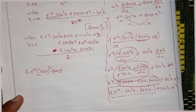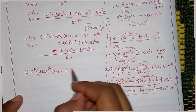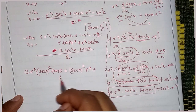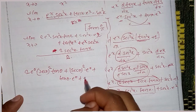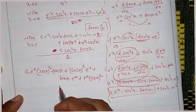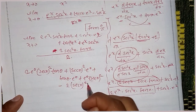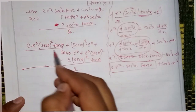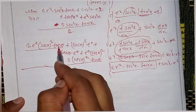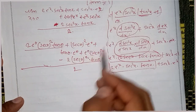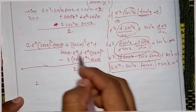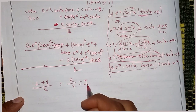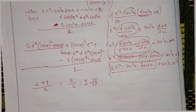Substituting 0: 0 plus sec 0 square into e^0 plus tan 0 into e^0 plus e^0 into sec 0 square minus 2 sec 0 square into tan 0, divided by 2. Now tan 0 is 0, sec 0 is 1, so 1 into 1 is 1 plus 0 — so 1 plus 1 — divided by 2, which equals 1. So the answer is 1.